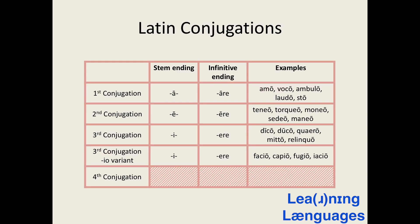Third conjugation verbs come in one of two forms: those which have an I-stem or IO in the first person present tense form, such as capio, fugio, and iacio; and those which do not, with dico, duco, and mitto being examples of these.